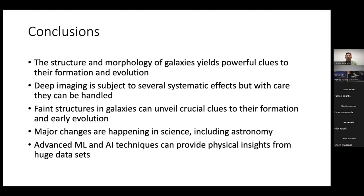In conclusion: the structure and morphology of galaxies provide powerful clues to their formation and evolution. Deep imaging is subject to several systematic effects but they can be handled with care. Faint structures in galaxies can unveil crucial clues to their formation and early evolution. Major changes are happening in science, including in astronomy, and advanced machine learning and AI techniques can provide physical insights from huge datasets. Thank you very much.